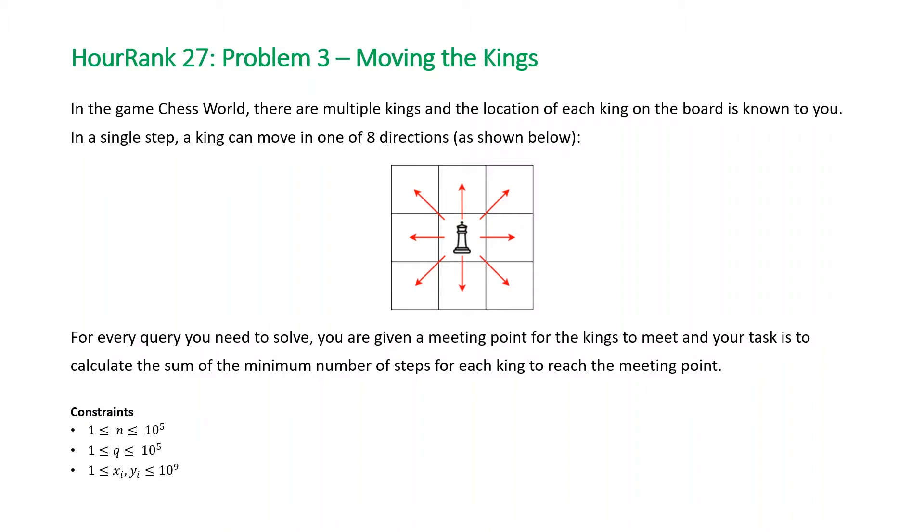A note for this question, we're given n, which is the number of kings, and q, the number of queries, and both of these are going to be in the range between 1 and 10 to the 5.